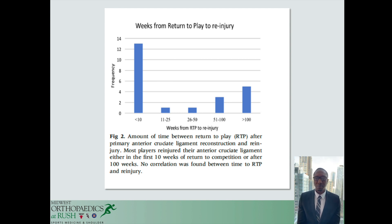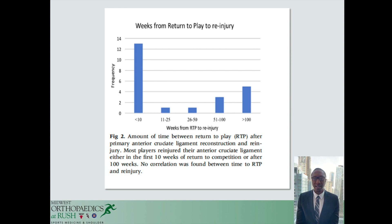Another factor in return to play is appropriate functional rehab, including return to normal strength, functional mechanics including running, jumping, cutting, and landing, and proprioception. Additionally, there is no uniform return to play functional test for athletes, which leads to a widespread variety in clearance of return to play. These are factors that can be improved in the future.